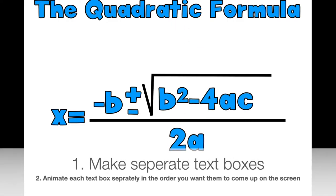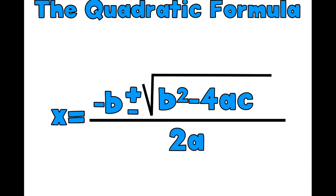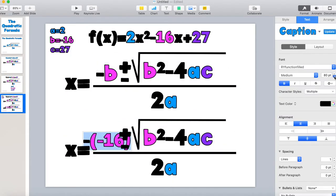That's the whole process in a nutshell: make separate text boxes for everything you want to come up on the screen, animate them in the order that you want them to come up. What I'm about to show you now is just extra if you want to keep following along.